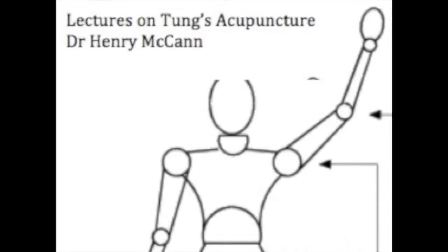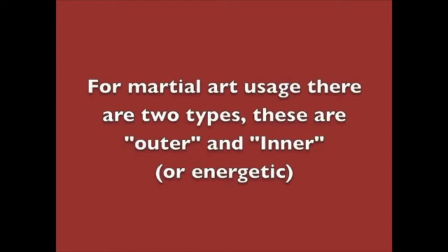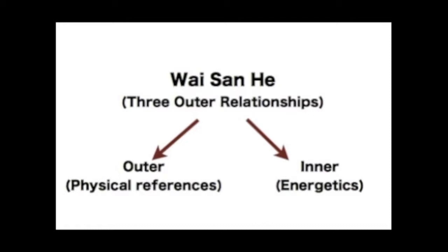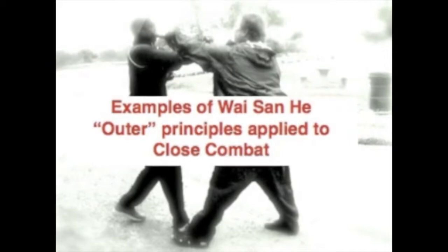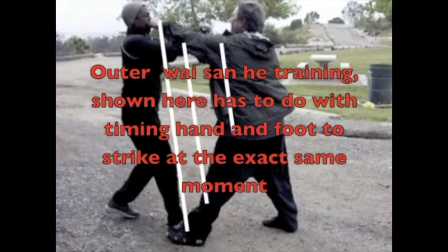There are two types of Weiss and Ha training: the outer principles and the inner or energetic. Weiss and Ha training has to do with principles of efficient close combat. Here are some examples of Weiss and Ha close combat principles.